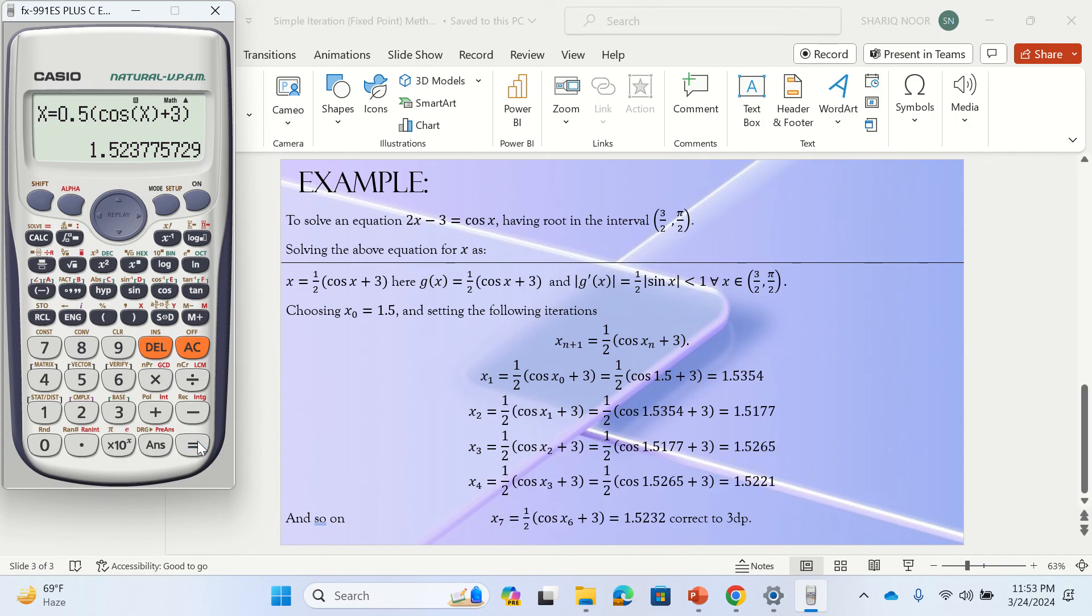Then for the next value, that's the seventh iteration which would give you 1.52377 something like that. If you look at the values, these five two three are repeating again and again. If you press equal you would see that these three digits are repeating - three decimal places repeating. We can get a result up to even nine decimal places.